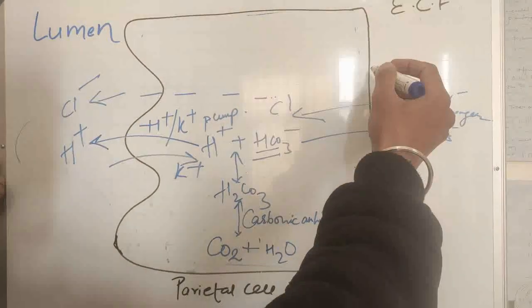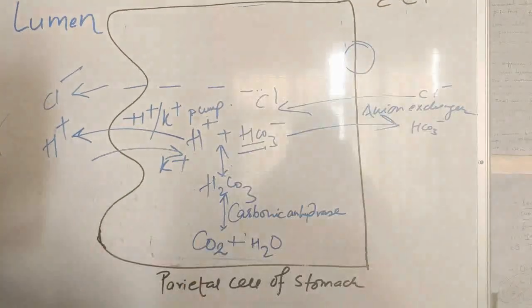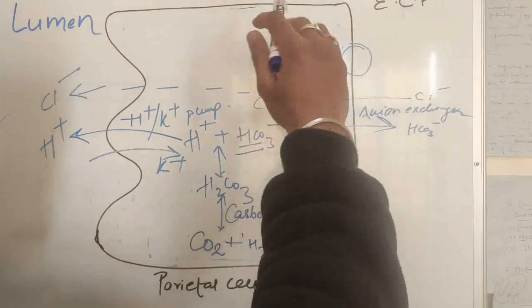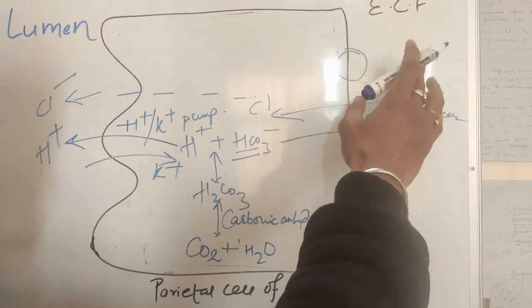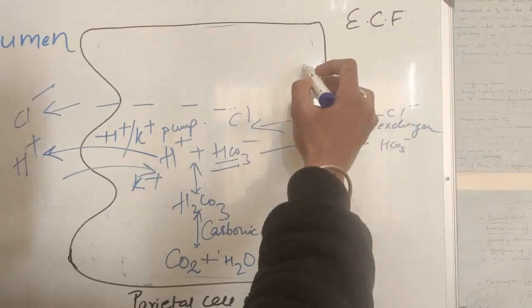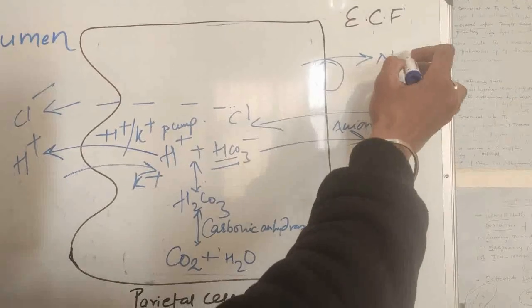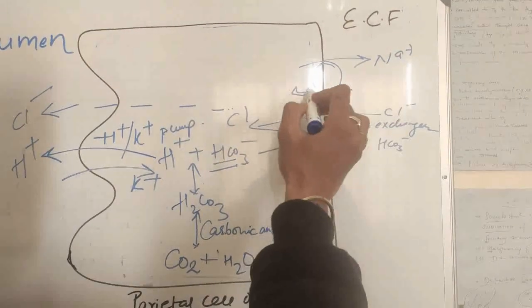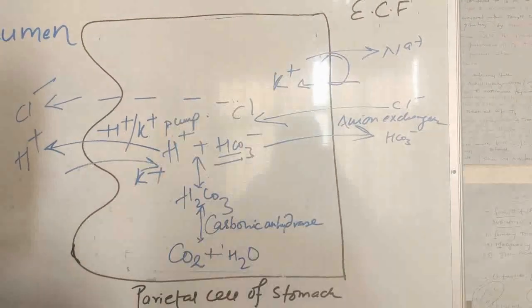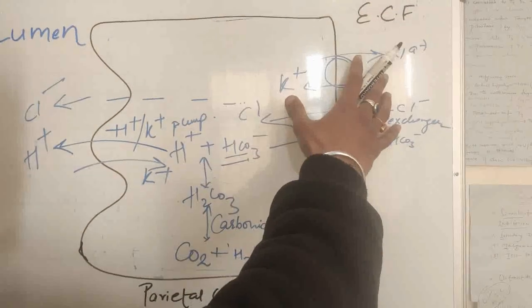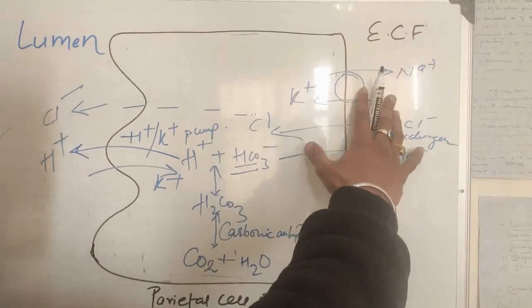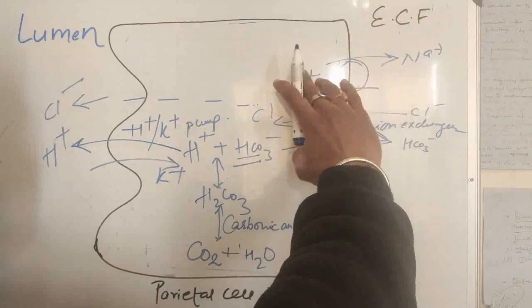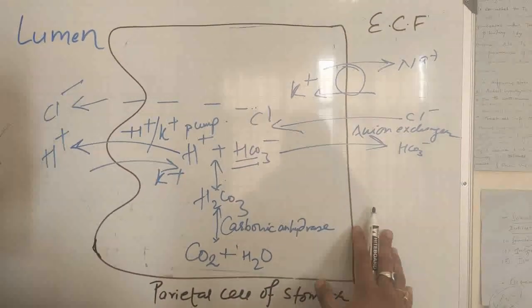Now there is a pump, the sodium-potassium pump in the extracellular side of the cell, which pumps sodium outside and potassium inside. This pump is basically present in nearly every cell of our body and it pumps three sodium out and two potassium in.